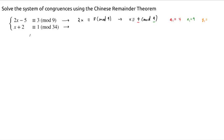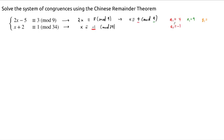For the next one, we just have to subtract 2. So x is congruent to negative 1, mod 34 — that's by subtracting 2 from each side. And negative 1 is congruent to 33 mod 34, but let's keep the negative 1, since it's a nicer number to deal with than 33. So a2 is equal to negative 1, and n2 is equal to 34. We also need to find y2.